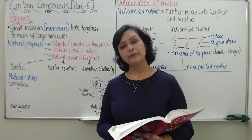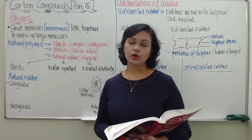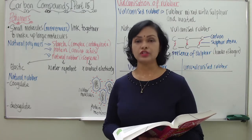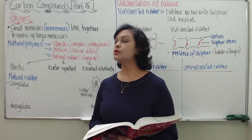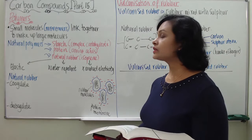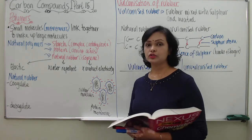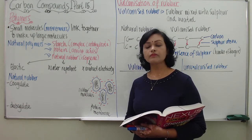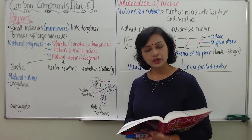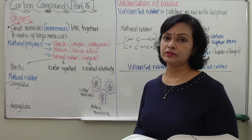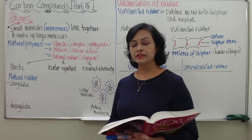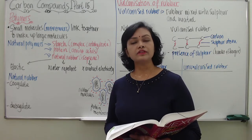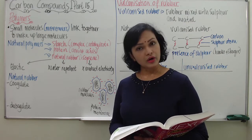That is the main reason why the majority of molecules go through polymerization. Now teacher would like to highlight examples of natural polymers. We have two types of polymers: natural polymers and synthetic polymers. Examples of synthetic polymers are nylon, polyethene, PVC, and polystyrene.